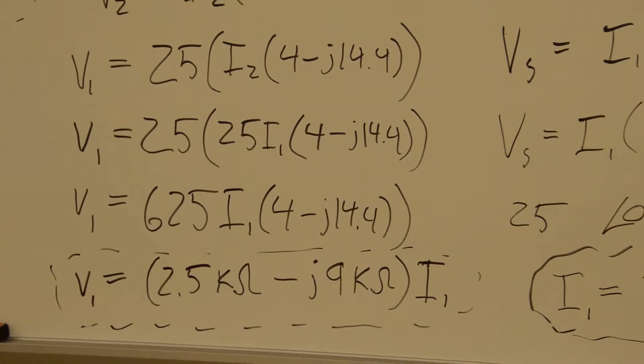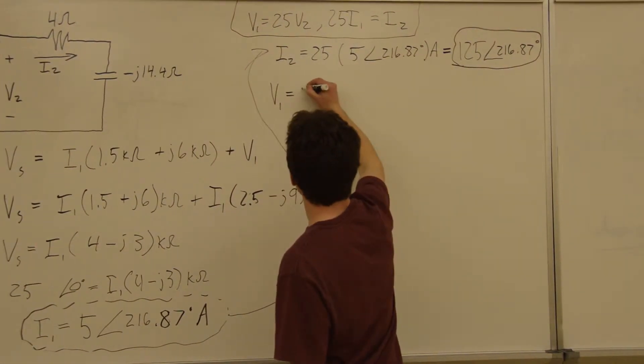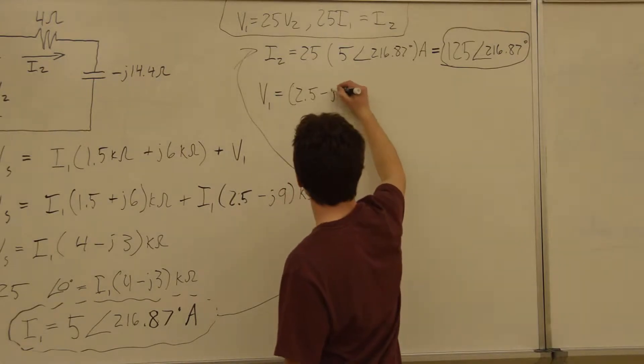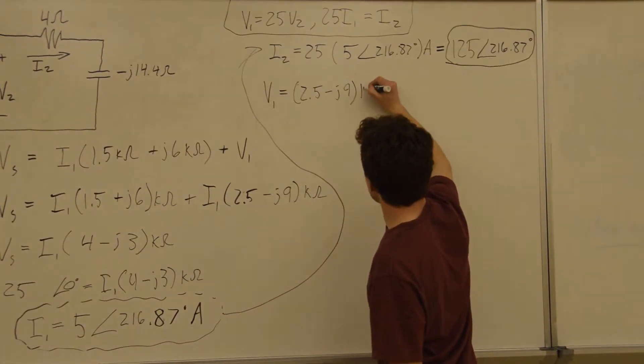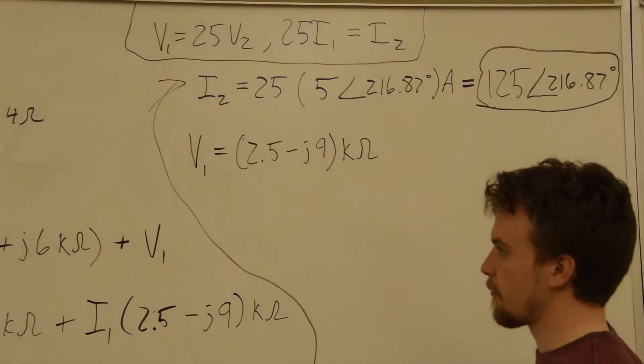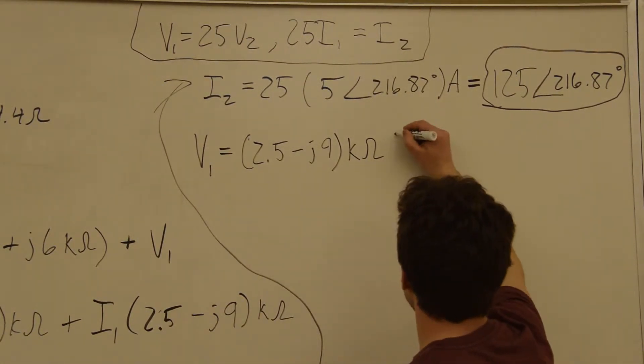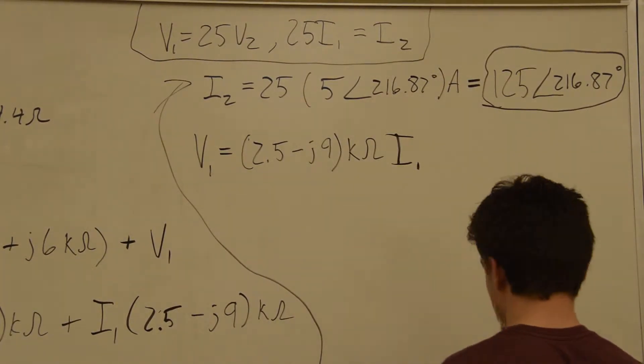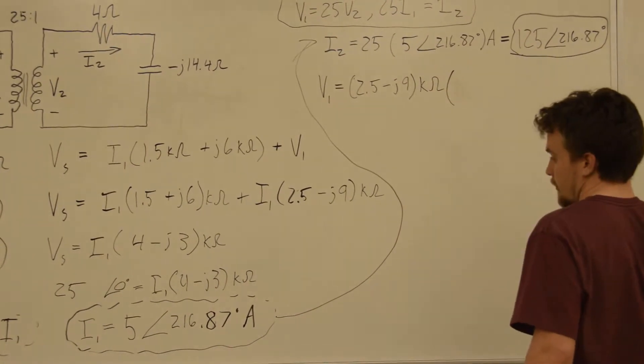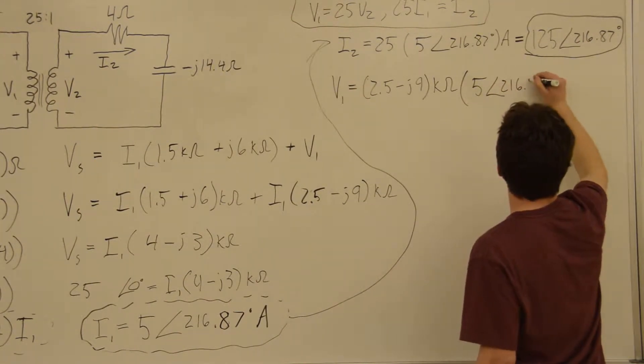So, we'll use that equation. We have a definite value for I1. So, let's say that V1 is equal to 2.5 minus J9. This is kilo-ohms. It's important to keep these values, or the order of these values, because we're working with really large differences in voltage and current. So, this is equal to V1, this times I1. And we have a value for I1. Let's just put that in there. This is all multiplied by 5 with a phase shift of 216.87 degrees.